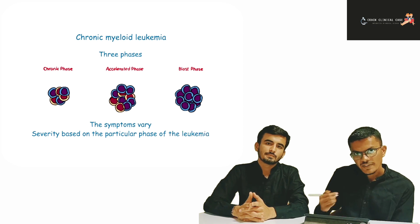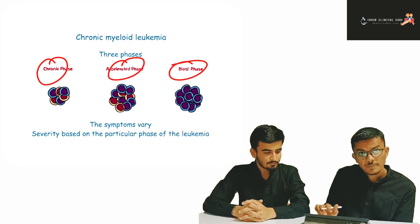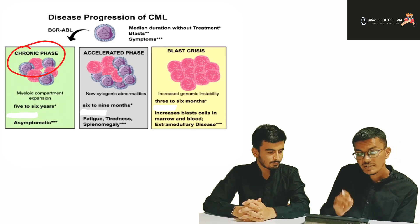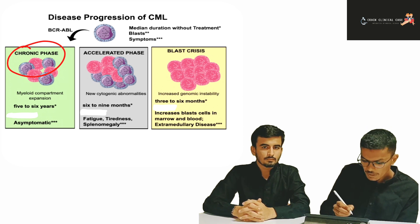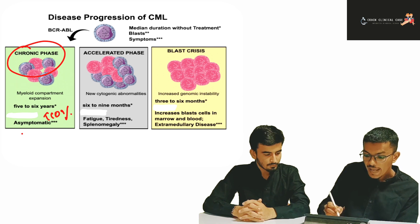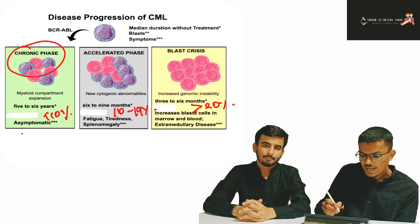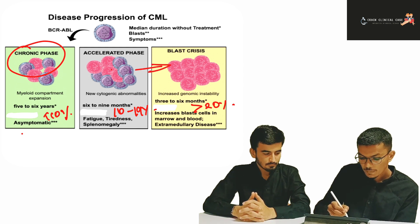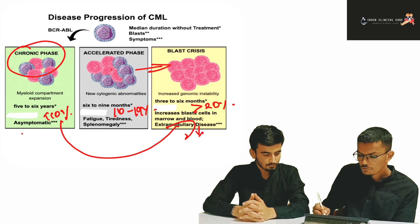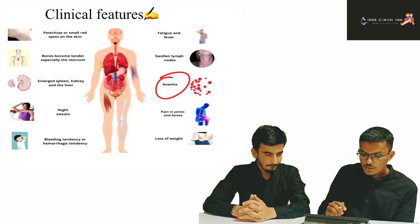CML is a triphasic illness: chronic phase, accelerated phase, and blast phase. In the chronic phase, blast count is less than 10%; in the accelerated phase, it is 10–19%; and in blast crisis, it is more than 20%. Sometimes chronic phase converts directly to blast crisis, bypassing accelerated phase. In blast crisis, it usually converts to acute leukemia — AML in 70% and ALL in 30% of cases.